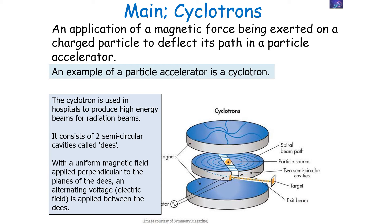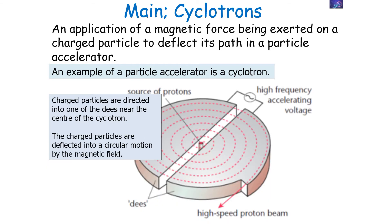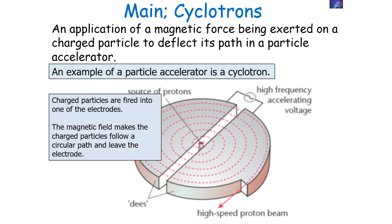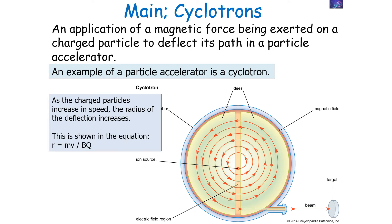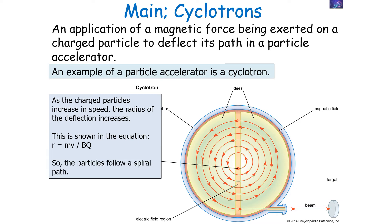A cyclotron consists of two circular cavities or disks which we call Ds, with a uniform magnetic field applied perpendicular to the planes of the Ds, and an alternating potential difference applied between the Ds. Charged particles are directed into one of the Ds near the centre of the cyclotron, deflected into circular motion by the magnetic field, and follow a circular path before leaving the electrode. As the charged particles increase in speed, the radius of deflection increases — from the equation r = mv / Bq — so the particles follow a spiral path where the radius is increasing.